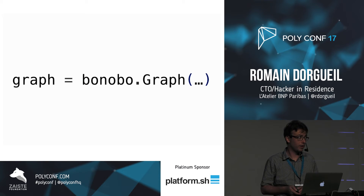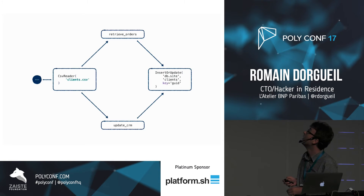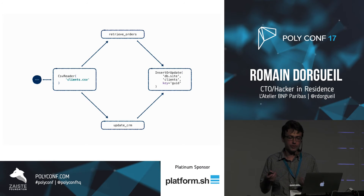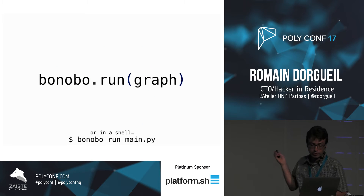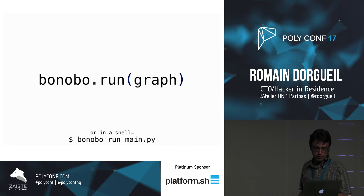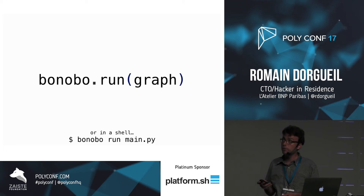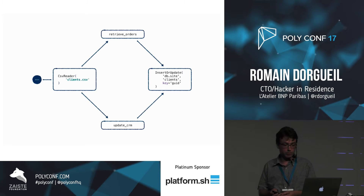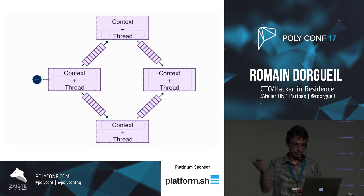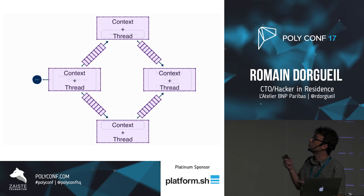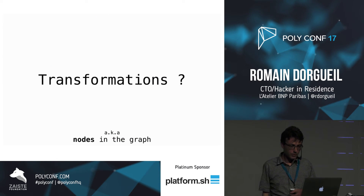The Bonobo graph data structure is very simple — it's a list of nodes and a list of edges, nothing very special. It can store any Python objects. When you then use bonobo.run on a graph, or use the CLI to run on a file or directory, it takes the graph and puts some machinery around it: it adds a context and a thread for each node, and adds a Python FIFO queue between each node to make the nodes communicate. That's implementation detail, but it helps to understand what Bonobo is doing behind the scenes.